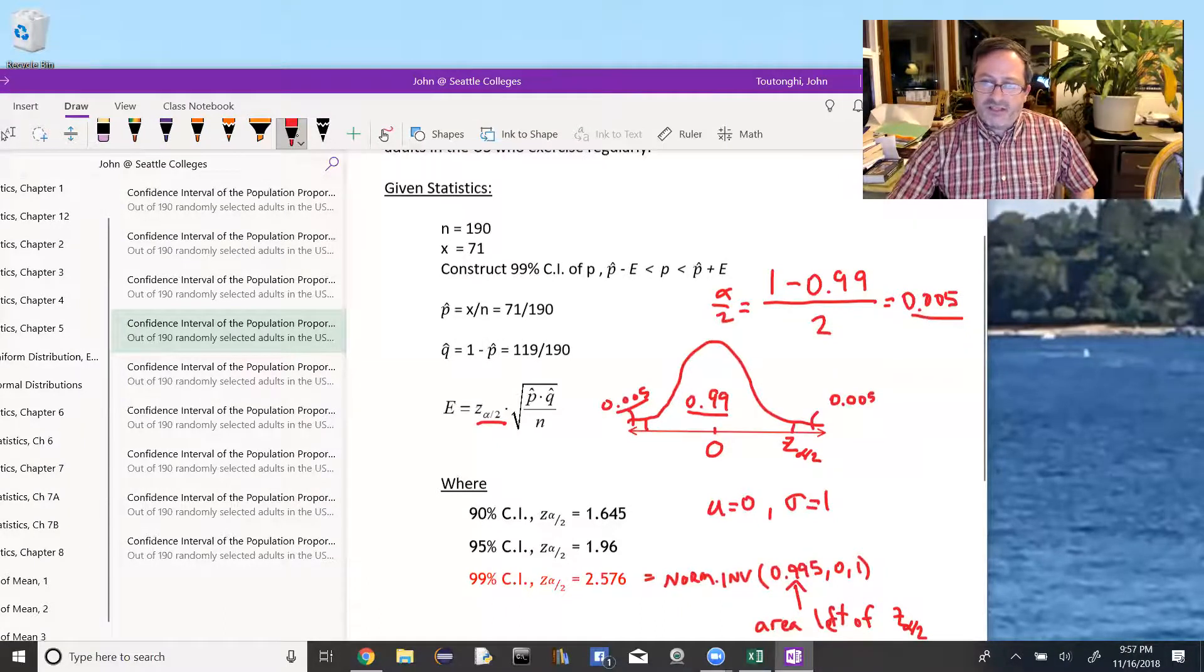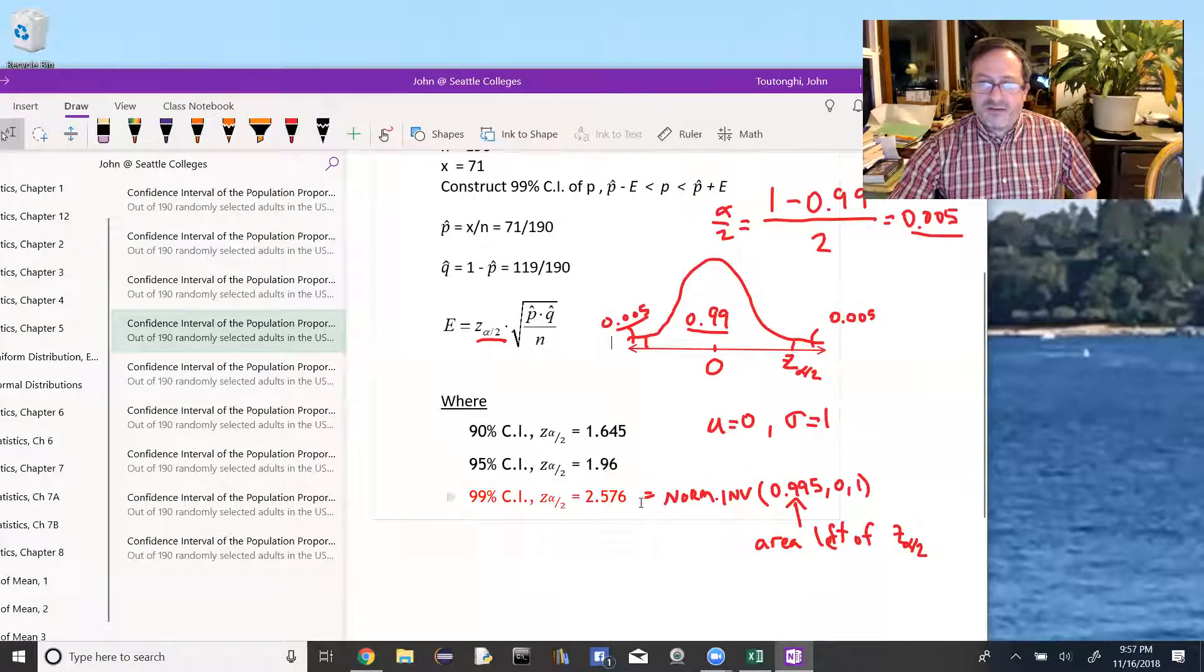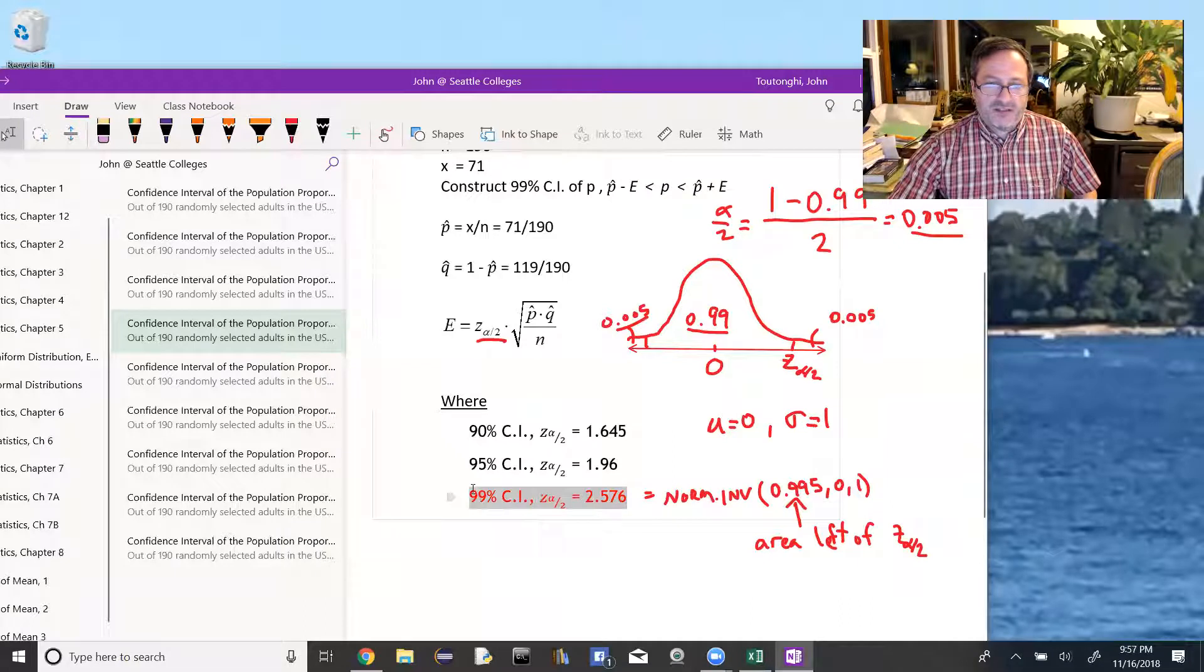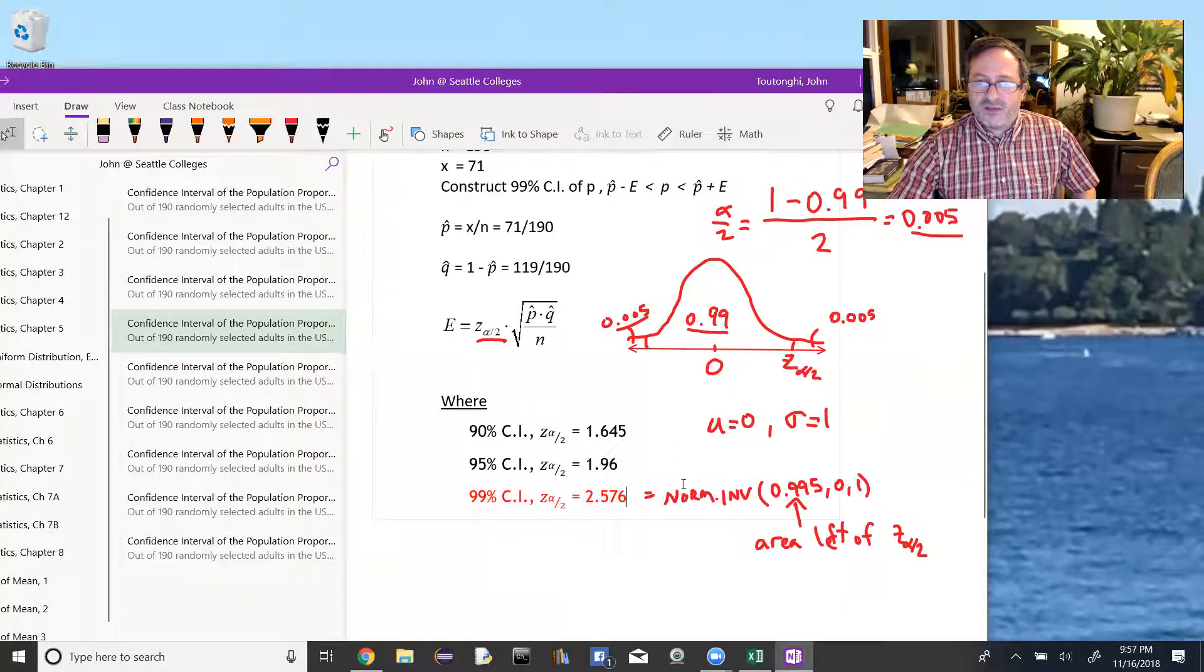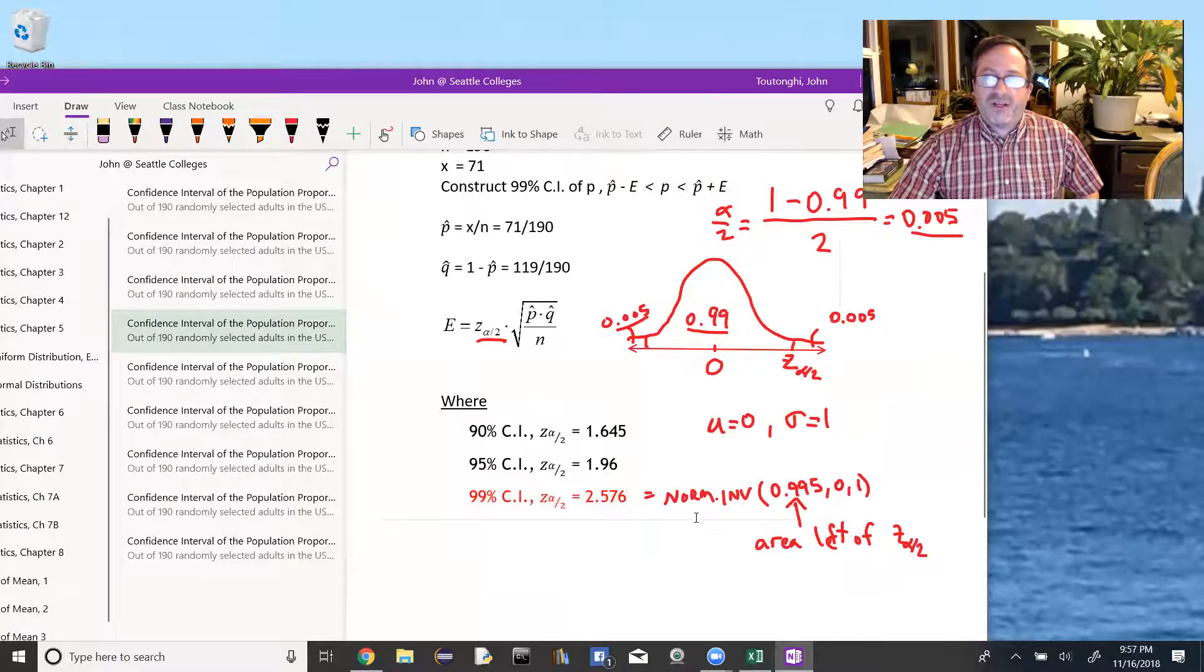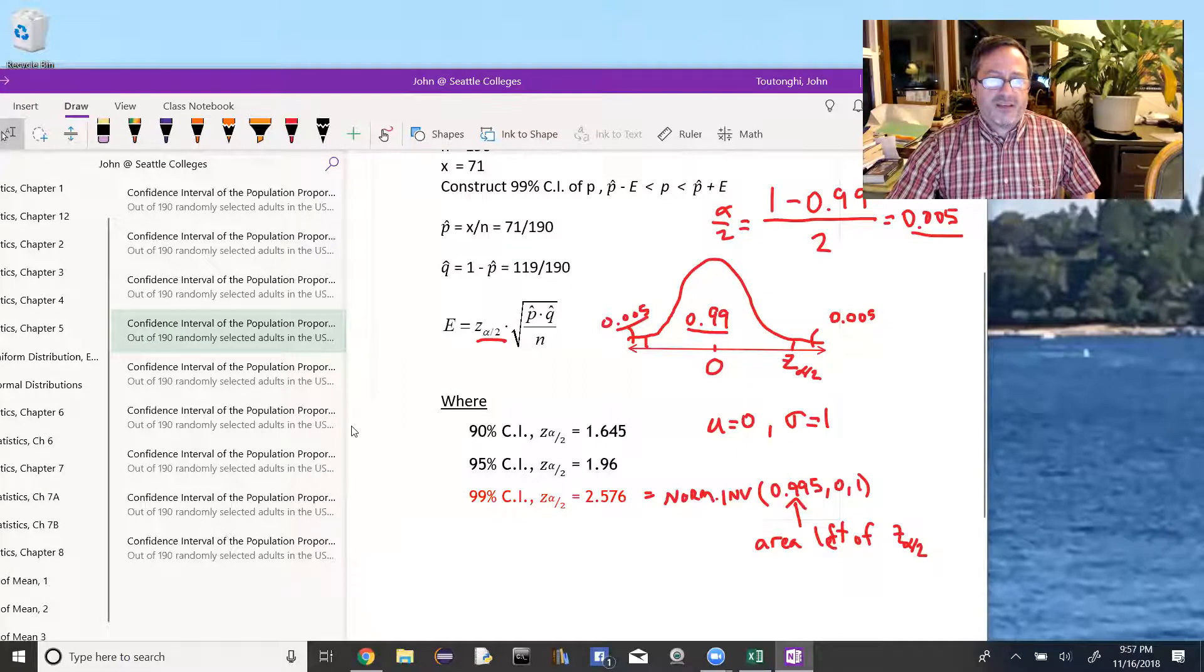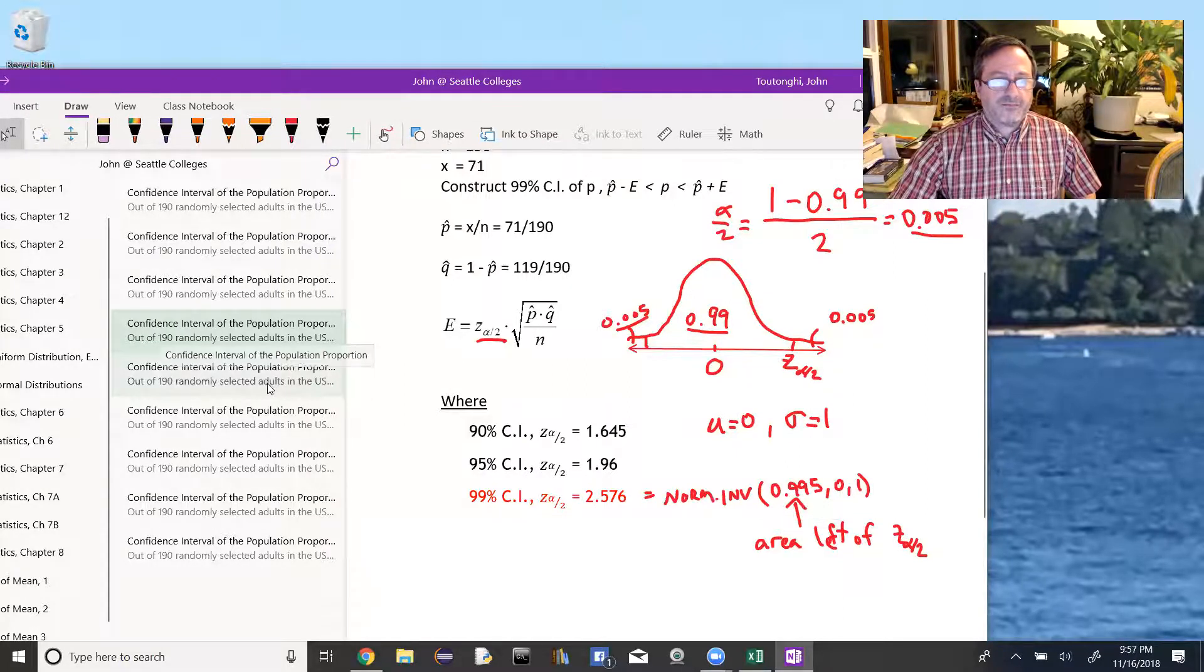We would need to take that 0.005 and add it to this 0.99 to get the total area left of this z-alpha over 2. We could do Excel to find that for 99% confidence interval. We know it already, but this value, 2.576, is going to equal norm.inverse 0.995, that's the area to the left of z-alpha over 2, with a mean of 0 and a standard deviation of 1. I'll do one next where the confidence level is an uncommon value.